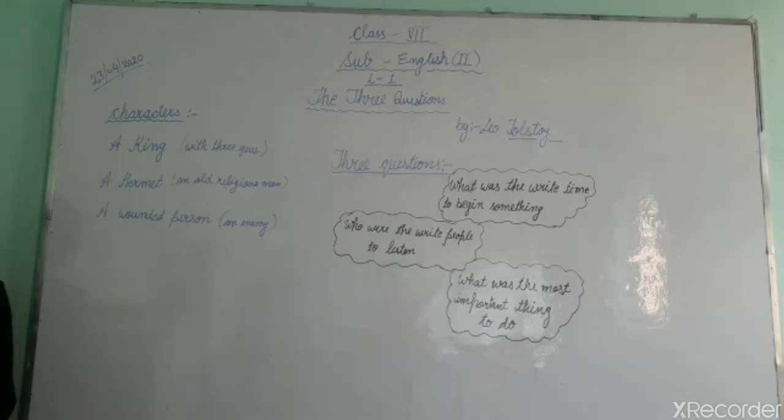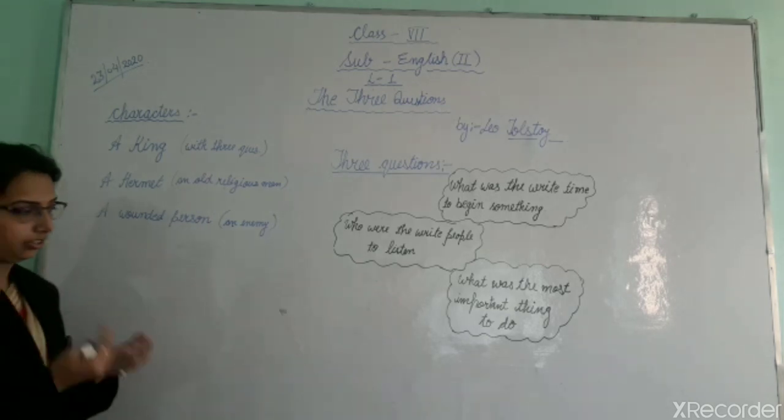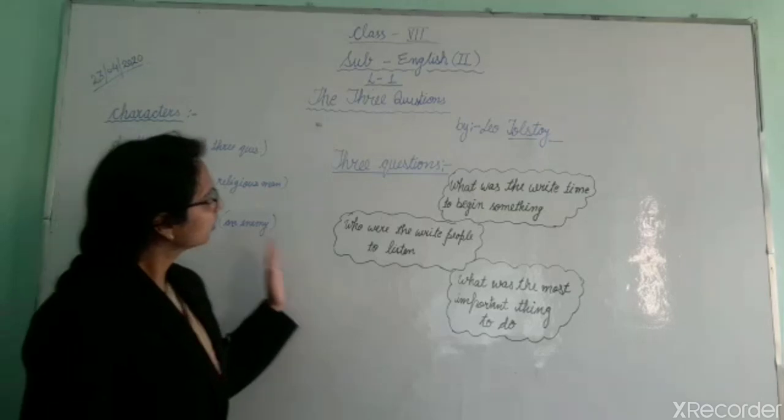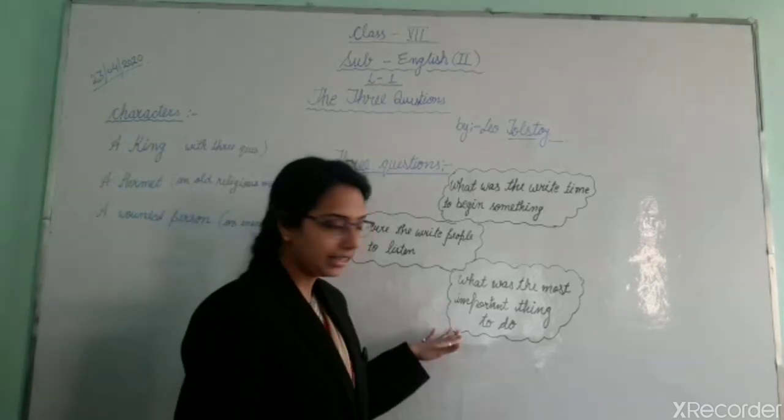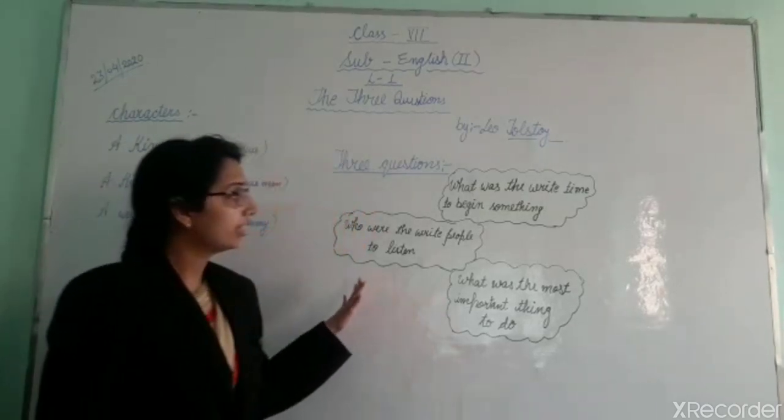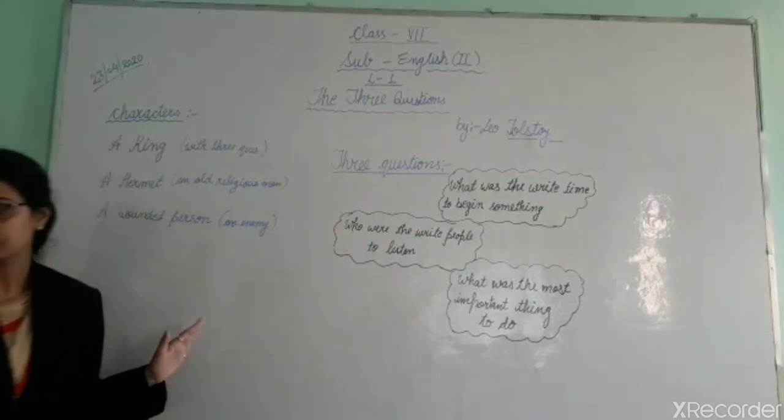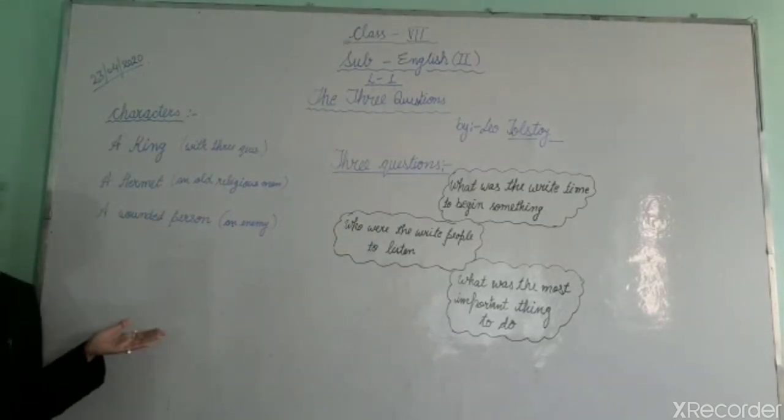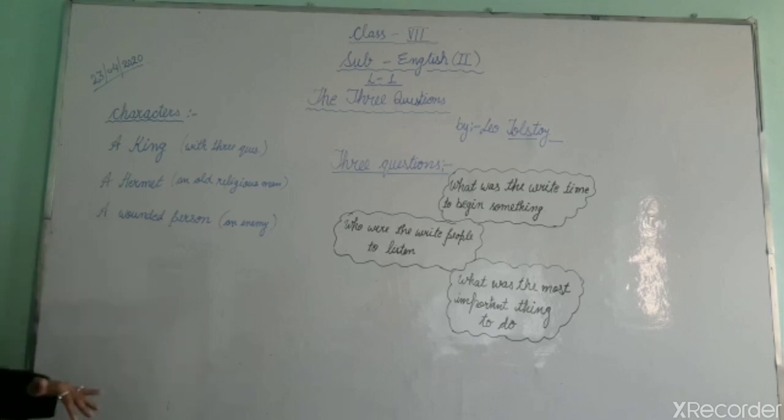The king stopped and again asked the questions to the hermit. But the same thing repeated again. The hermit didn't answer anything, and as the king was not having any option, he again started to dig the soil.